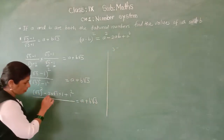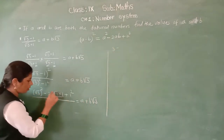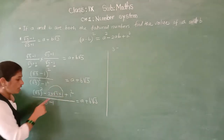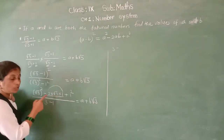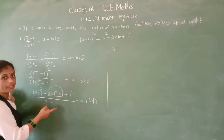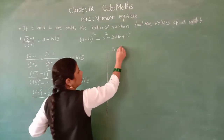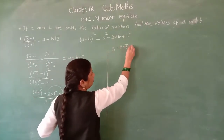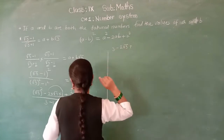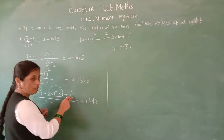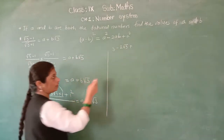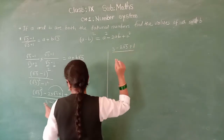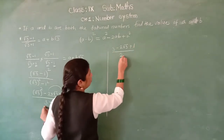Minus — here multiplication of all these numbers: 2 multiplied by 1 is 2, and multiplied by root 3 gives 2 root 3. So you will get 2 root 3. And what is 1 squared? 1 squared is 1. Upon here: 3 minus 1 is 2. Equals A plus B root 3.